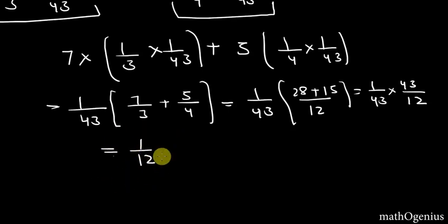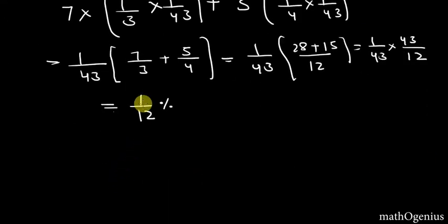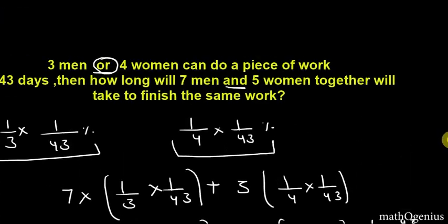So this is not the days it will take to complete that work, it is the percent of work done in one day by 7 men and 5 women. So if 1 by 12 of work is done every single day, then it will take 12 days to complete that work. So this is how we solve these types of questions.